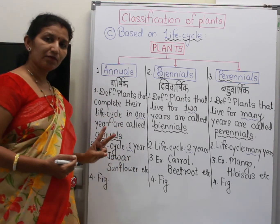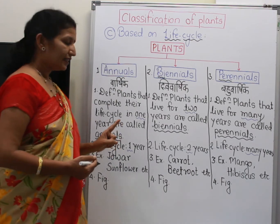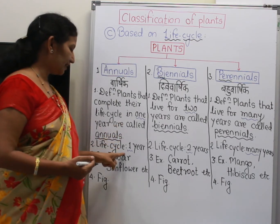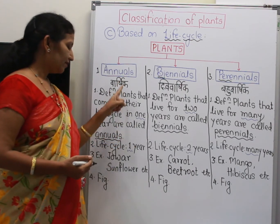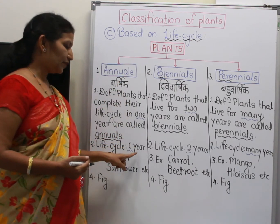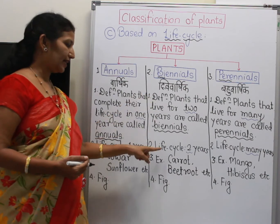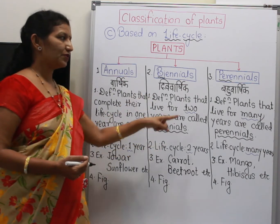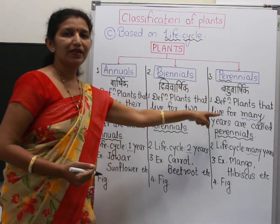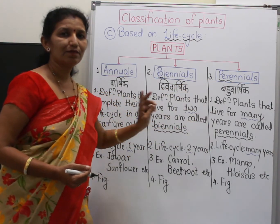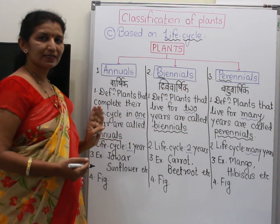Now, the life cycle duration: annuals — one year; biennials — two years; perennials — many years.